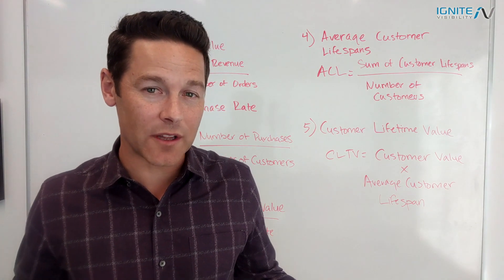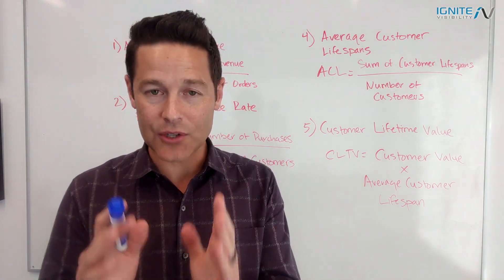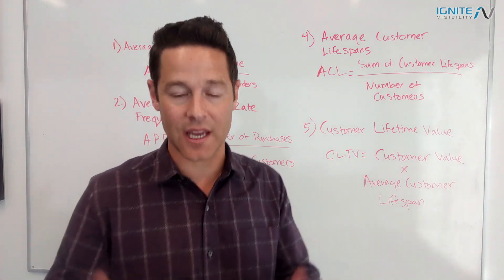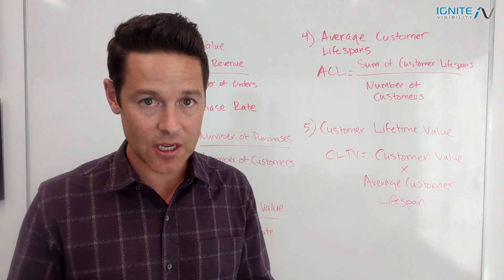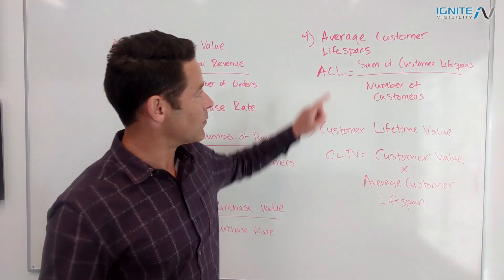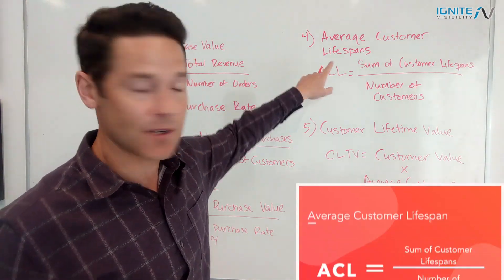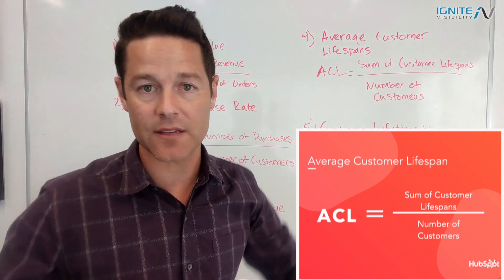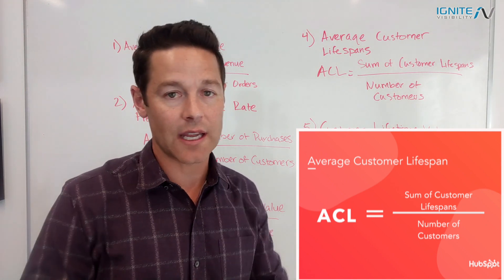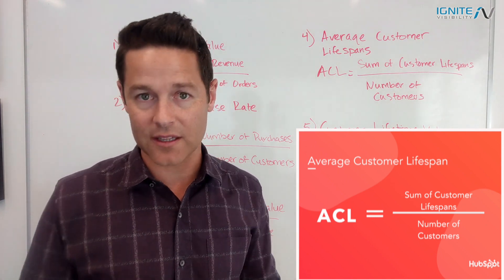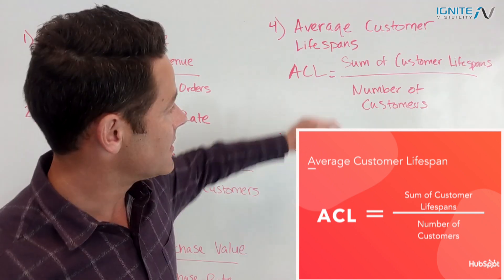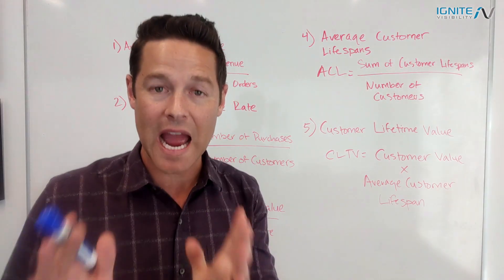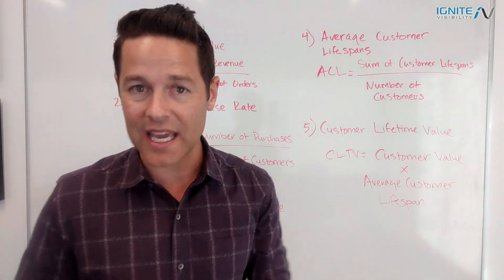Item number four is a really important one because it tells you how long your customers stay with you — the customer duration. The way you calculate the average customer lifespan is by taking the sum of all customer lifespans, so looking at all your customers and how long they've been with you, taking the sum of that, and then dividing by the number of customers you have. That gives you your average customer lifespan.